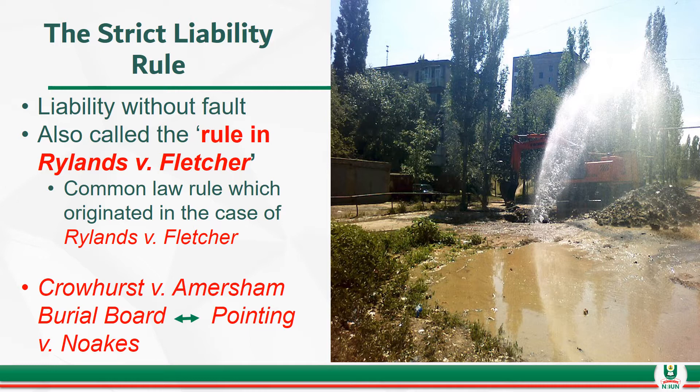What happened basically in that case was that the defendant engaged contractors to build a reservoir for him, so he could gather water for his mill. When the contractors built the reservoir, they saw a mineshaft that was disused but they didn't bother to block it. When the reservoir was full, water escaped through that mineshaft onto the land of the plaintiff and caused a lot of damage.